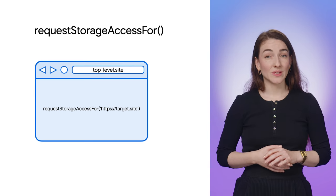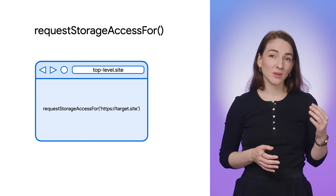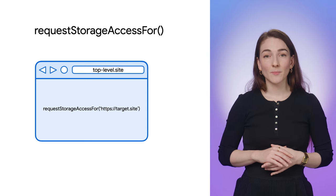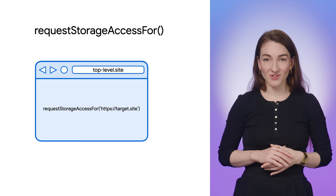The requestStorageAccessFor API is meant to be called by a top-level document and requires that the document must also have just received user interaction. Now is the time to audit your site to see how it works when third-party cookies are blocked. If you find that you need to use Storage Access API for unpartitioned cookie access across a small group of meaningfully linked sites, related website sets can offer a smoother user experience without prompts for sites within a set and additional functionality for the top-level site, not just the iframe, to grant storage access.